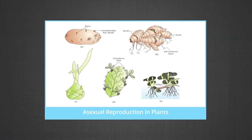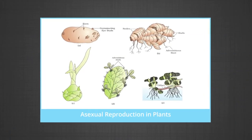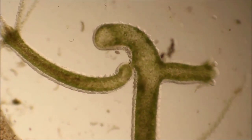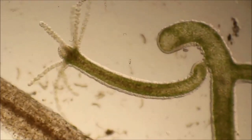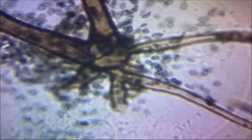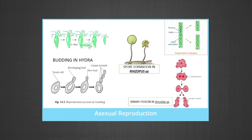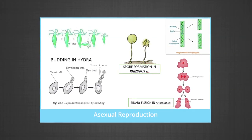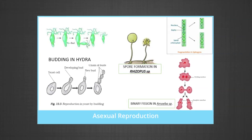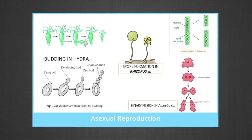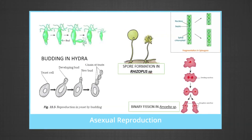Asexual reproduction involves a single parent and is very common in single-cell organisms and in many plants. There are many forms of asexual reproduction. For example, fission is seen in amoeba. Budding is seen in lower organisms like hydra and yeast. Fragmentation is seen in spirogyra. Sporulation is seen in many fungi like rhizopus. Vegetative propagation is a very common example in plants — bryophyllum reproduces through leaf buds, sugarcane and potato can reproduce through stem, while plants like dahlia can reproduce through roots. In unicellular organisms, the parent cell divides into two daughter cells through mitosis, also called fission.